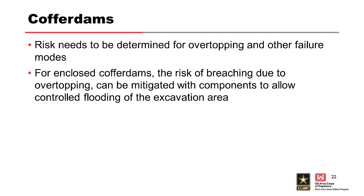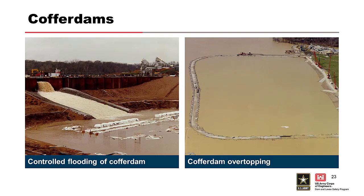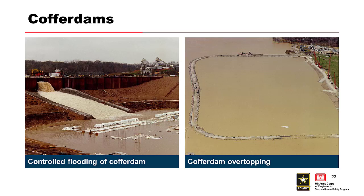Risk of cofferdam failure needs to consider overtopping as well as other potential failure modes like internal erosion. The next example is a cellular cofferdam in which the risk of breaching due to overtopping was mitigated. The cofferdam was flooded intentionally before being overtopped by two feet for two weeks. If the excavation had not been flooded prior to overtopping, the cellular cofferdam surely would have failed since there was about a 100-foot difference in elevation from the bottom of the excavation floor to the cofferdam crest. After the flood, only minor repair of erosion in the top of a few sheet pile cells was required, along with extensive cleanup of mud.